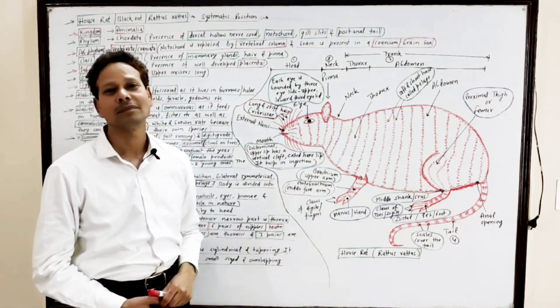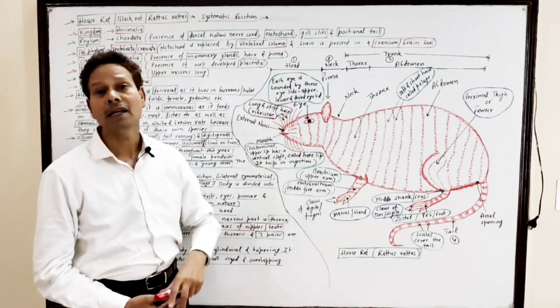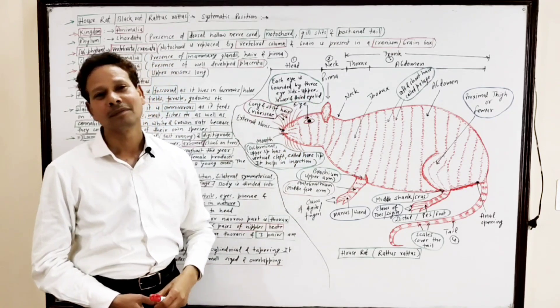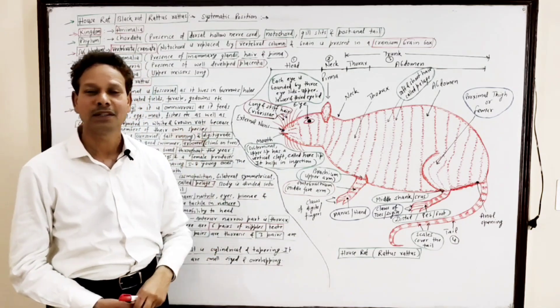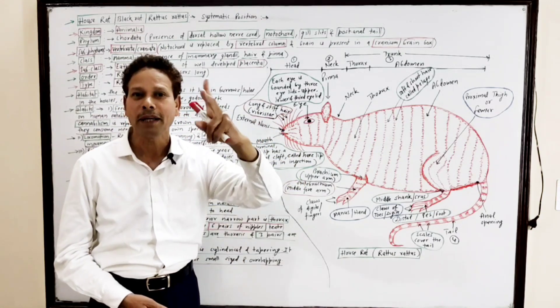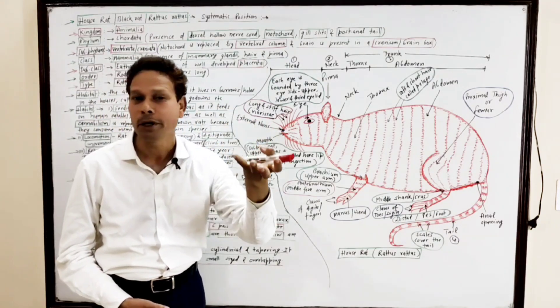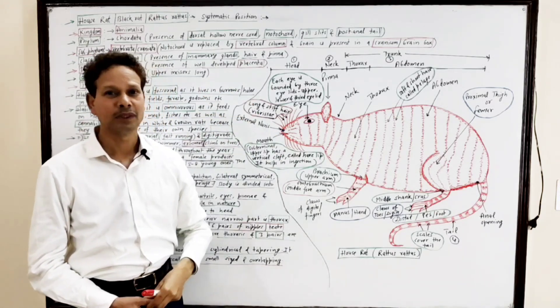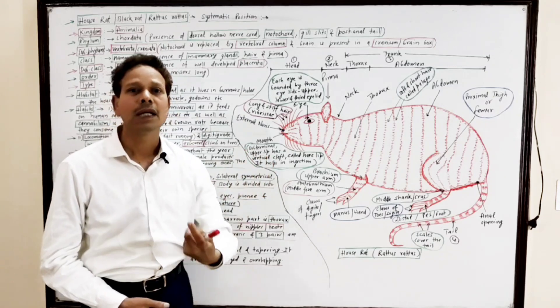The head bears mouth, a pair of eyes, a pair of external nostrils, and a pair of external ear pinnae. Mouth in case of rat is not terminal, it is subterminal. The mouth is bounded by two lips. The upper lip, important point for competitive exam students, has a vertical cleft called harelip that helps in ingestion of food.